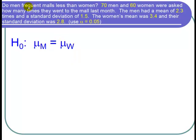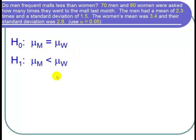Since we want to find out if men frequent malls less than women, our alternative hypothesis H1 is mu sub m is less than mu sub w.